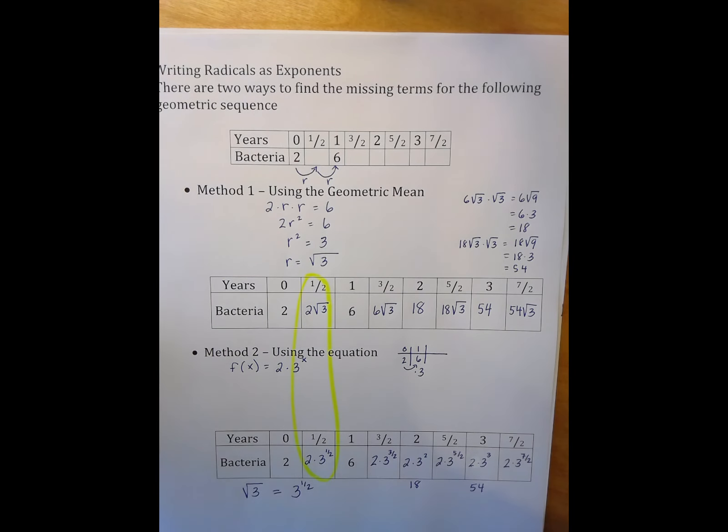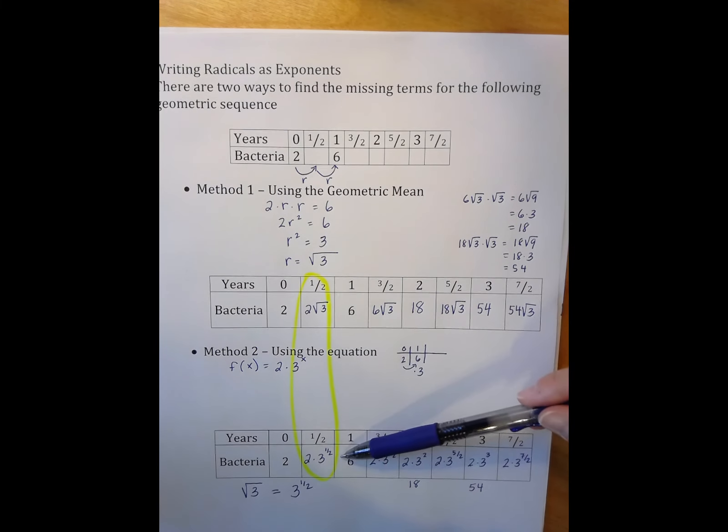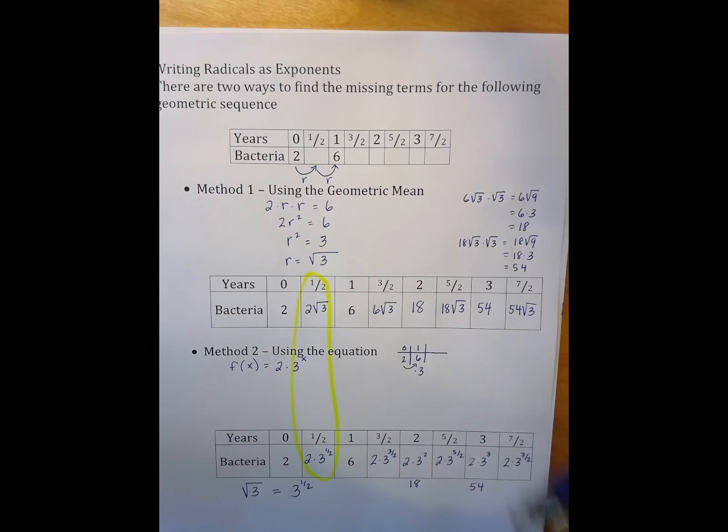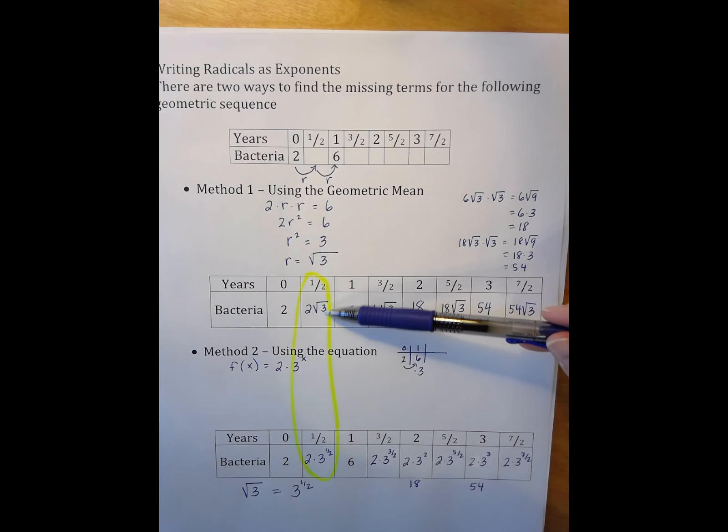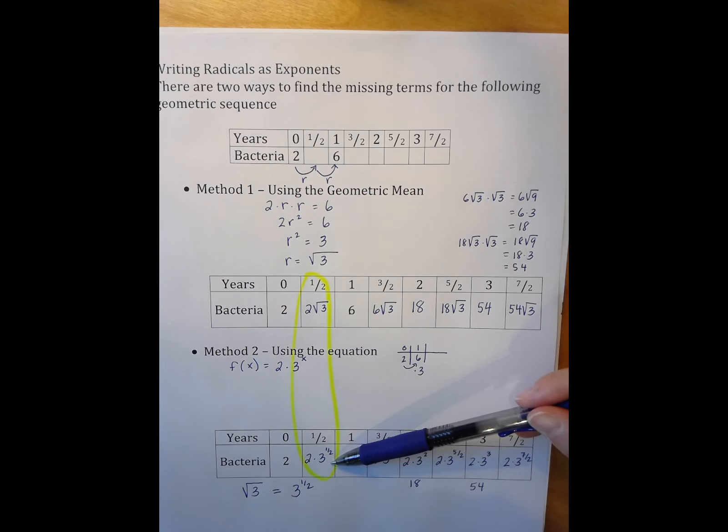So I can now rewrite all radical expressions as exponents. And we're going to explore this idea further, but for now, I think it's really important to notice this pattern. That in order for these tables to represent the same information, which it has to because that's what I'm trying to do, the square root of 3 must equal 3 to the 1/2 power.